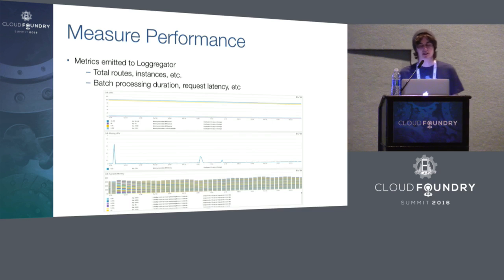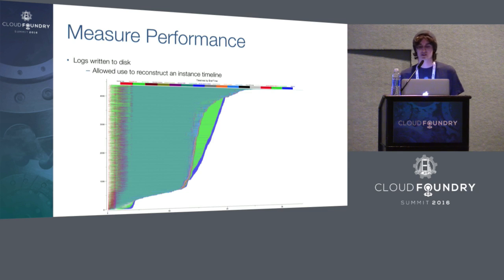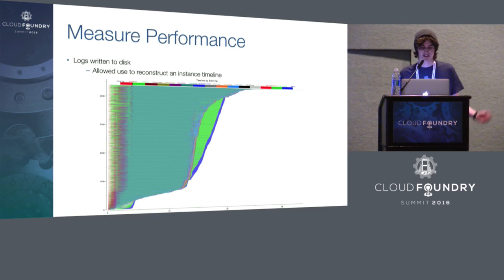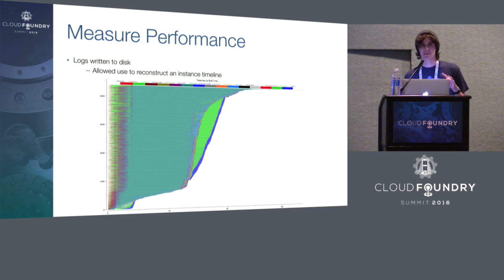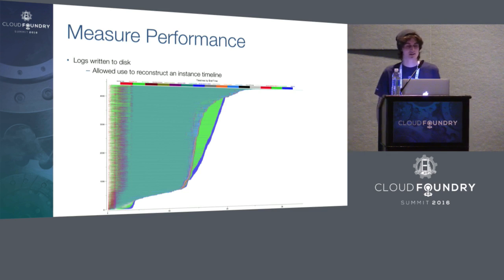One way we measure performance is through CF's own internal logging and metric aggregation, Loggregator. We use tools such as Datadog to generate charts and graphs to visualize metrics — tracking things like total number of application instances and their state, total number of routes, the throughput and latency of the BBS, and many other concerns. We also post-process internal system logs to create detailed visualizations: we tag log lines with task and LRP GUIDs and map where individual workloads are in the system at any given time. This chart shows 4,000 tasks running on Diego where each color represents a different phase of their lifetime — it's a great way to immediately find performance bottlenecks.